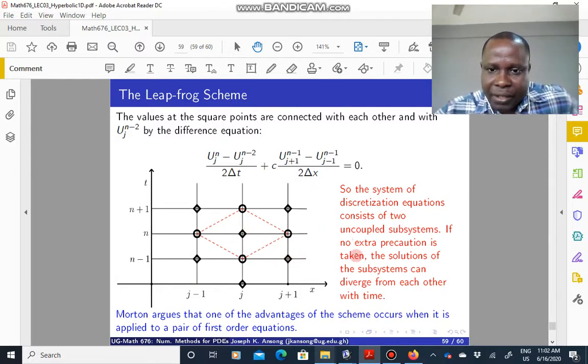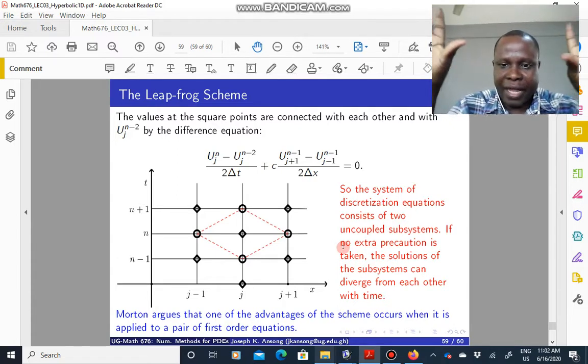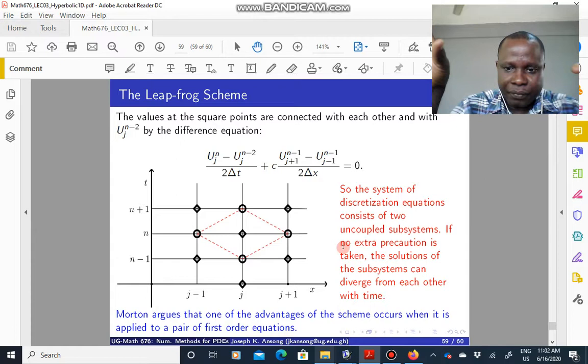So as I mentioned here, the system of discretization equations consists of two uncoupled subsystems. They are like independent systems. So if you don't take any extra precaution, the solution of the subsystems can diverge from each other and that will cause instability.